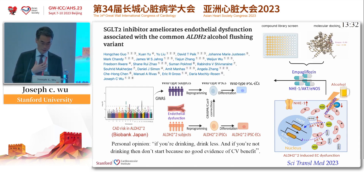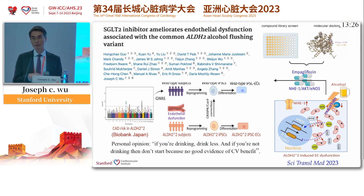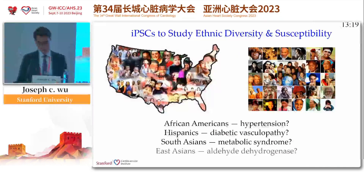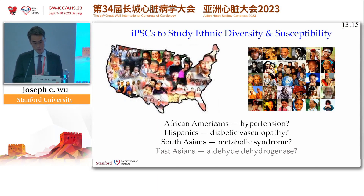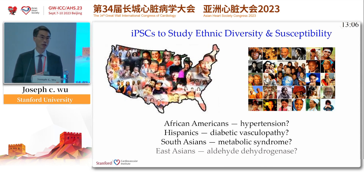And so my personal opinion is that if you're drinking, try to drink less. And if you're not drinking, do not drink — in my opinion, there is zero benefit to cardiovascular health from alcohol drinking. I show you one example of how we can use iPSC cells to study East Asians with aldehyde dehydrogenase deficiency. We have several projects in our lab studying African Americans with hypertension, Hispanics with diabetic vascular neuropathy, and South Asians with metabolic syndrome.